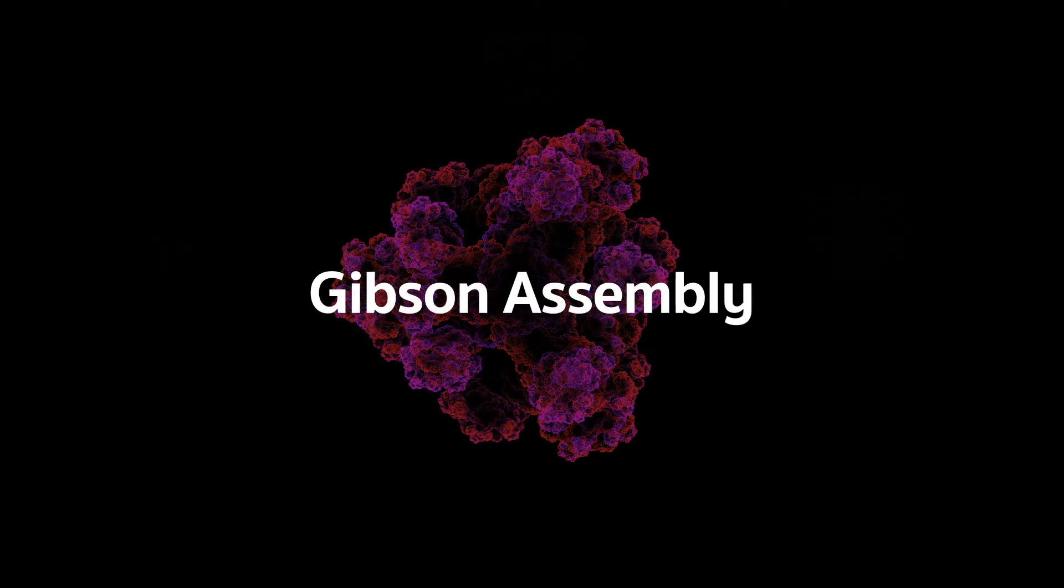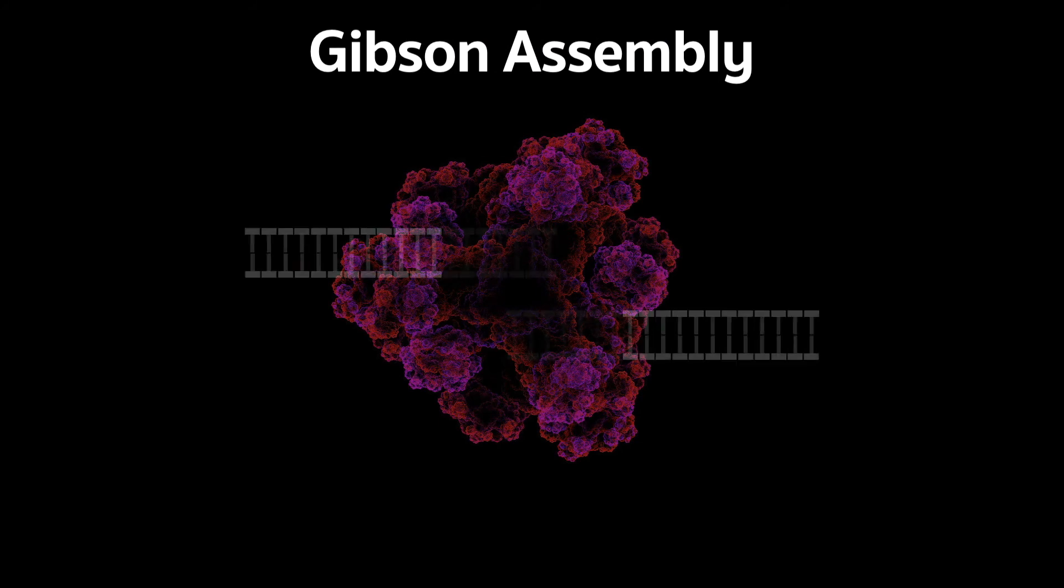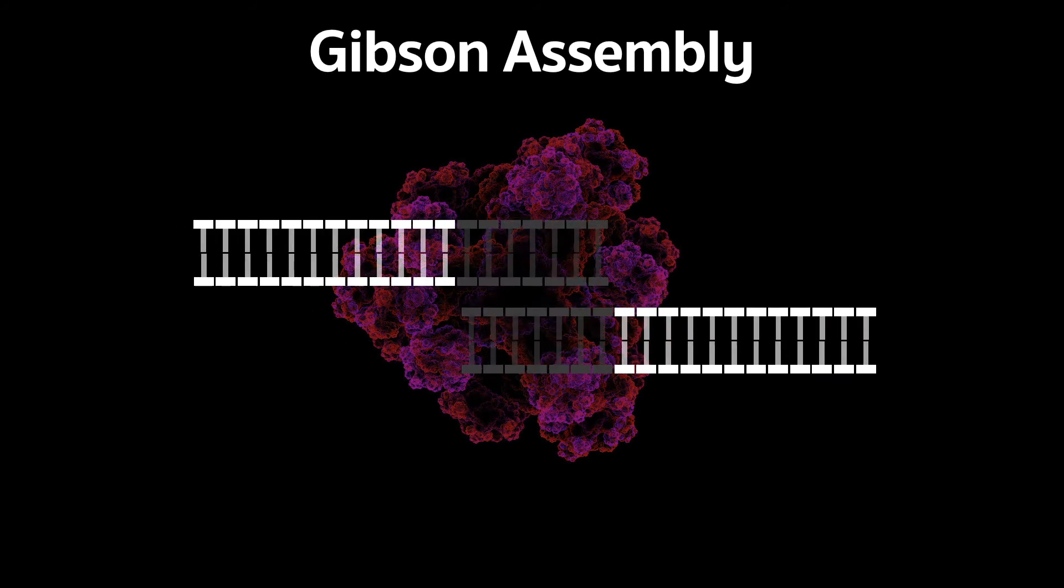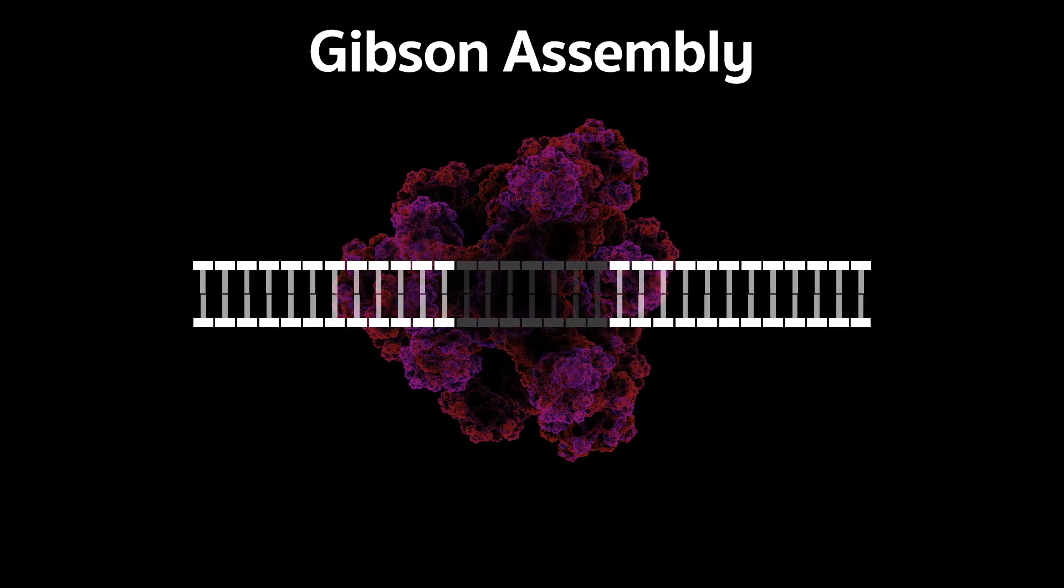So the next technique up in the list would be the Gibson assembly. It's a really cool technique for binding DNA together. Say, we have two strands that have an overlap. We can use an enzyme named exonucleus to cleave the ends that are overlapping, and we can join them together via hydrogen bonding, of course. And there are a few enzymes that help the Gibson assembly complete itself by linking the DNA completely. But I won't go into much detail about this. Just know that this technique is all about joining DNA that has an overlap together.